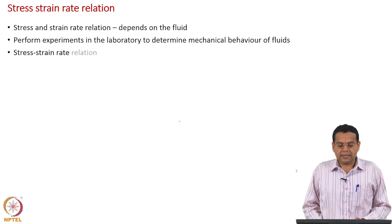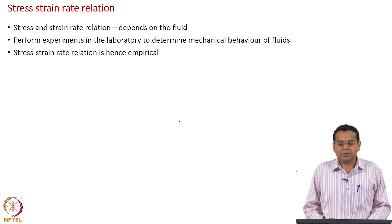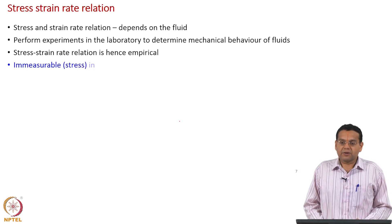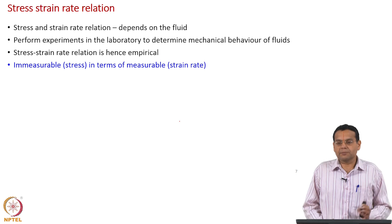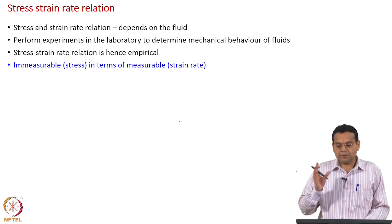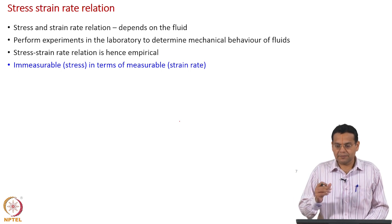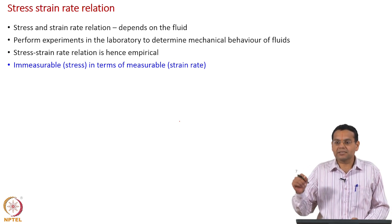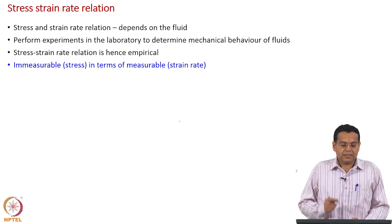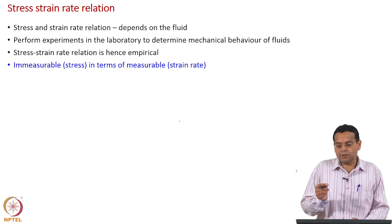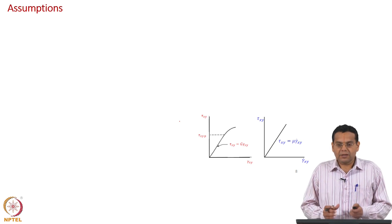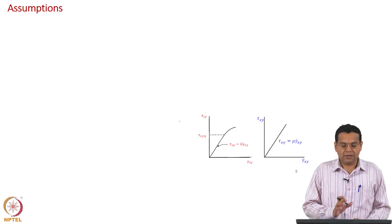The stress–strain-rate relationship is empirical — it is experimental. You cannot derive it theoretically; you can only empirically relate these two. As we did for solids, we are going to relate an immeasurable quantity — namely stress — in terms of a measurable quantity. There it was strain; now it is strain rate. Strain rate is measurable because it is in terms of velocity gradients, and velocity gradients are measurable. That is why stress, which is immeasurable, is expressed in terms of strain rate.